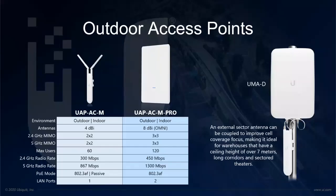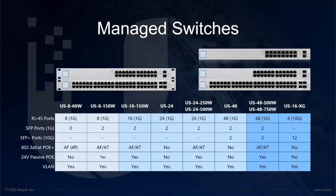We also have a couple of outdoor access points ideal for outdoor environments — the UAP AC Mesh and the Mesh Pro, which offers strong coverage in outdoor areas like schools, campuses, hotels, and gardens. The UAP AC Mesh can also be coupled with an external sector antenna to improve coverage focus and make it ideal for large areas like warehouses that have a very large ceiling height or long corridors.